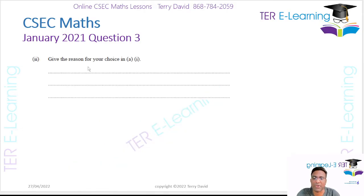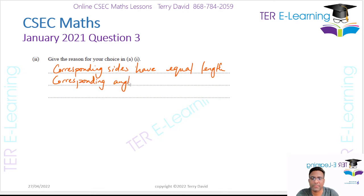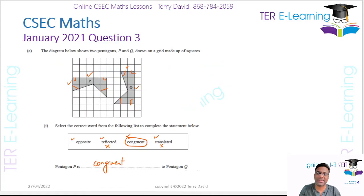To give a reason: corresponding sides have equal lengths, and corresponding angles are the same. Don't use the word similar, because in maths similar and congruent mean two different things.